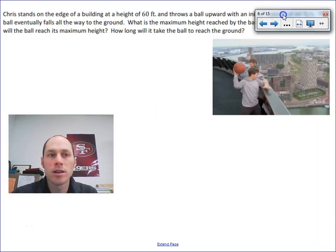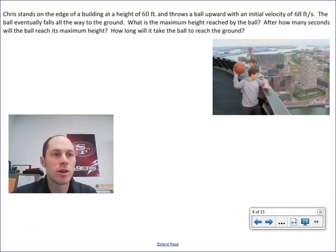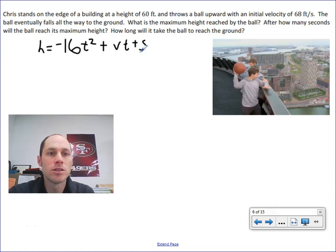Let's take a look at another problem. I'll have you take a look at that and try this one on your own. Chris stands on the edge of the building at a height of 60 feet, throws the ball upward with an initial velocity of 68 feet per second. The ball eventually falls all the way to the ground. What's the maximum height reached by the ball? How many seconds will the ball reach its maximum height? How long will it take the ball to reach the ground? Remember, we start with our projectile. The ball is going up in the air, but it's not going to stay up in the air too long. Negative 16t squared plus vt plus s. Come up with your equation and then answer the questions. Restart the video when you're ready to see an explanation.